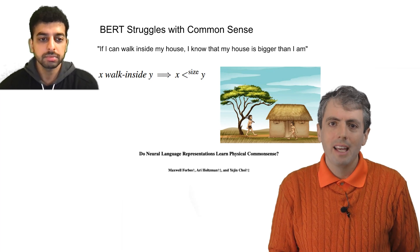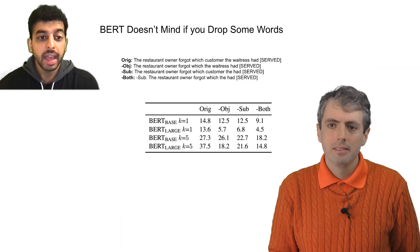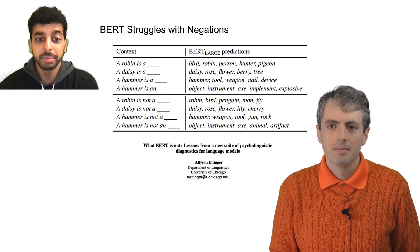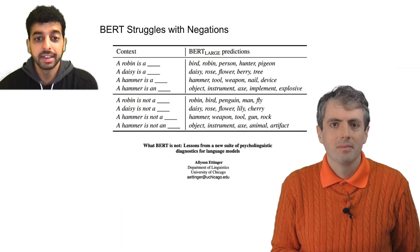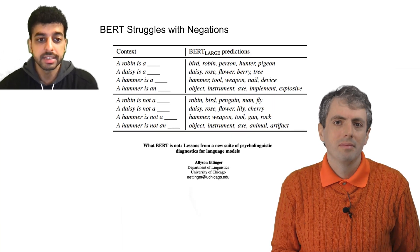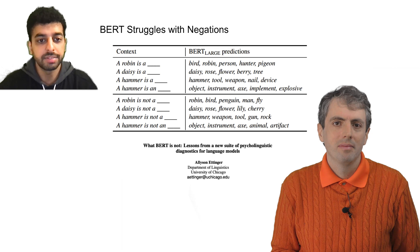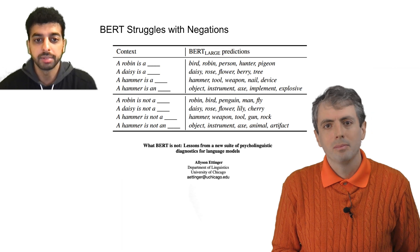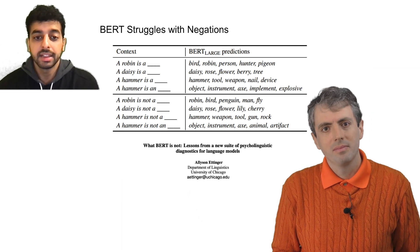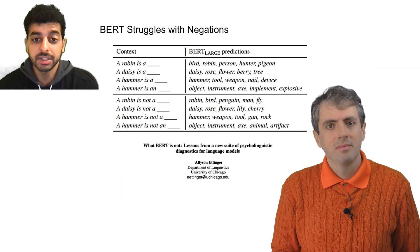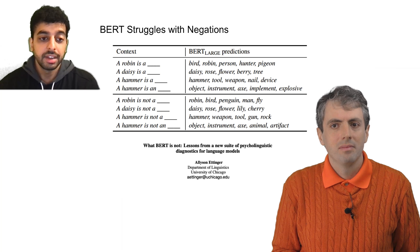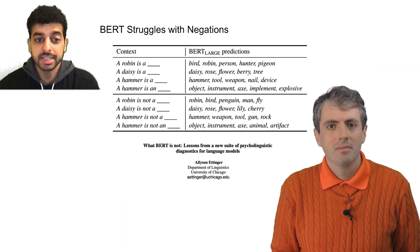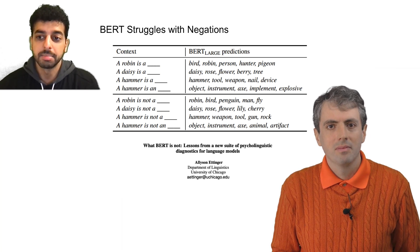Let's go back to syntax. Are there any cases where it can't fill in the blank? Edinger et al. showed that it doesn't understand negations. If you ask it to fill in the blank of 'a robin is an x,' the answers look good-ish. If you ask it to fill in 'a robin is not an x,' it does much worse.